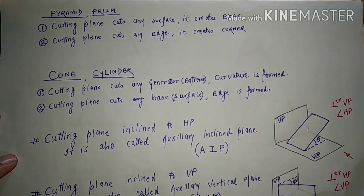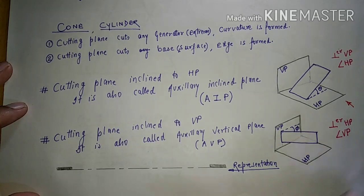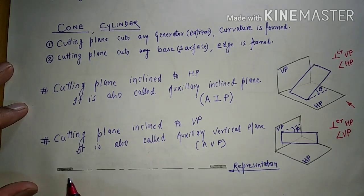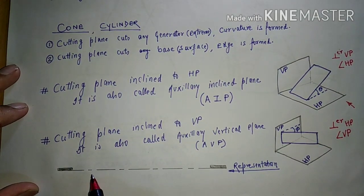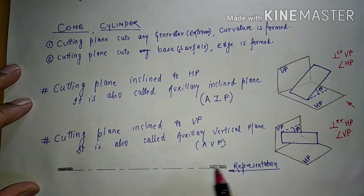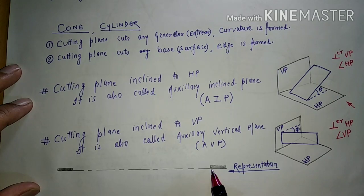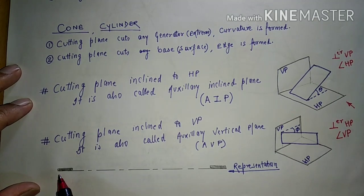The representation of the cutting plane line is similar to the axis line: big dash followed by a smaller dash, then big dash, small dash, and at the extreme ends, the biggest dashes which are thick in nature. This is the representation.